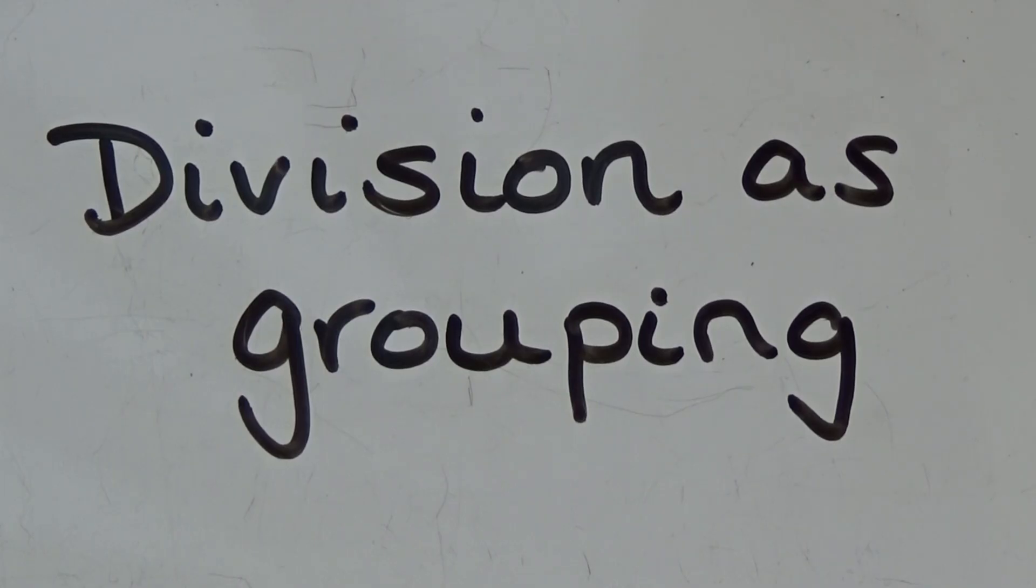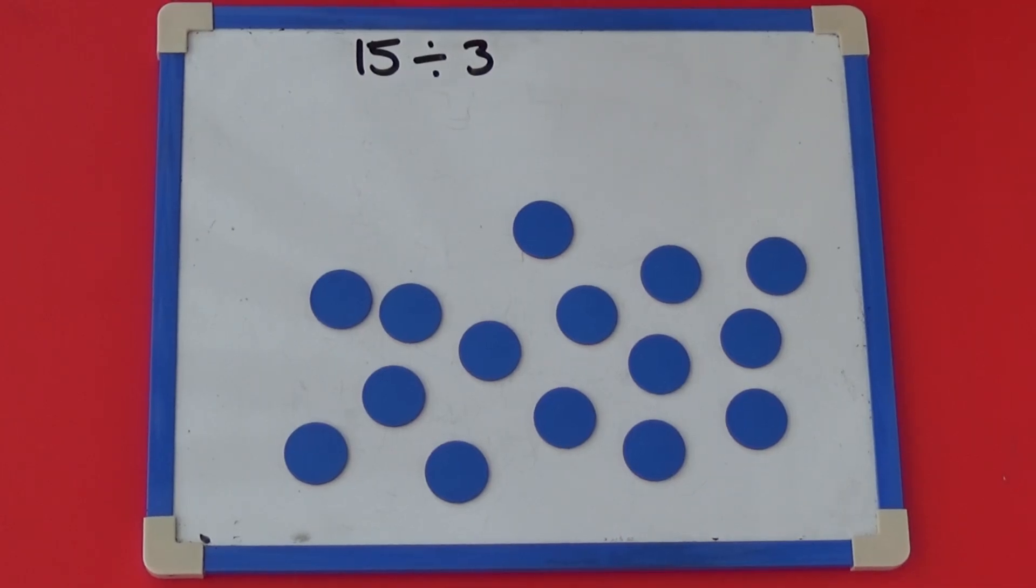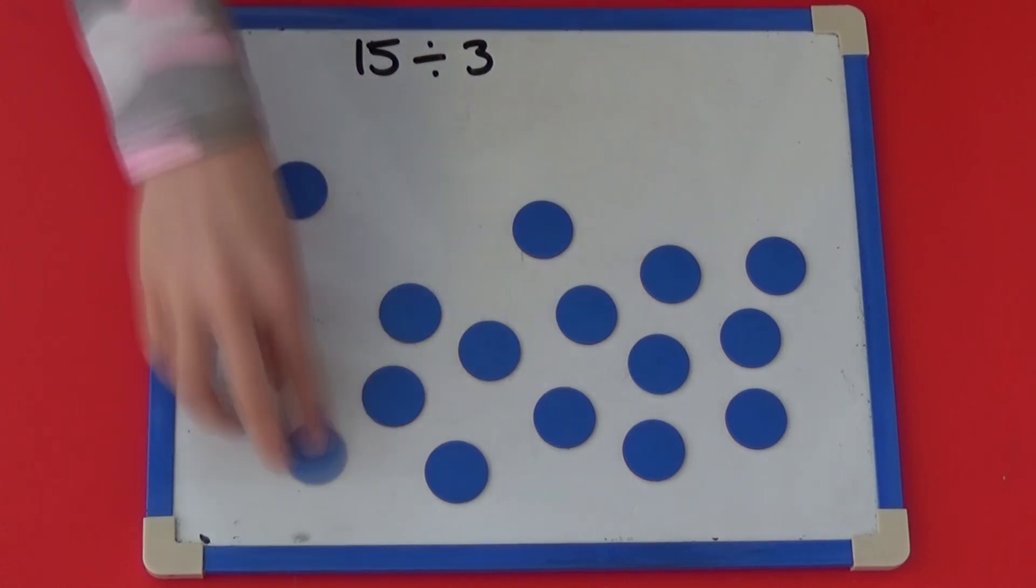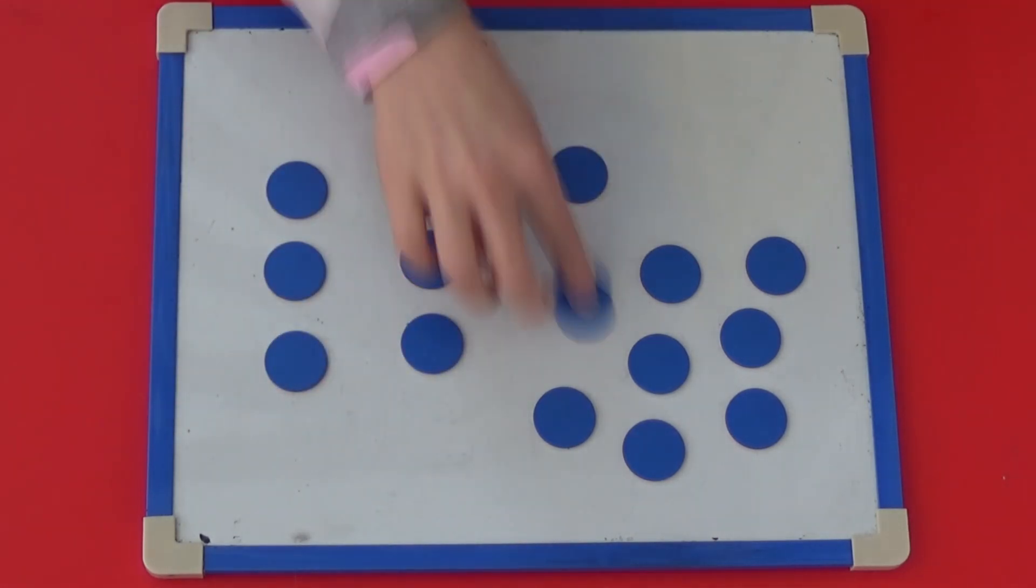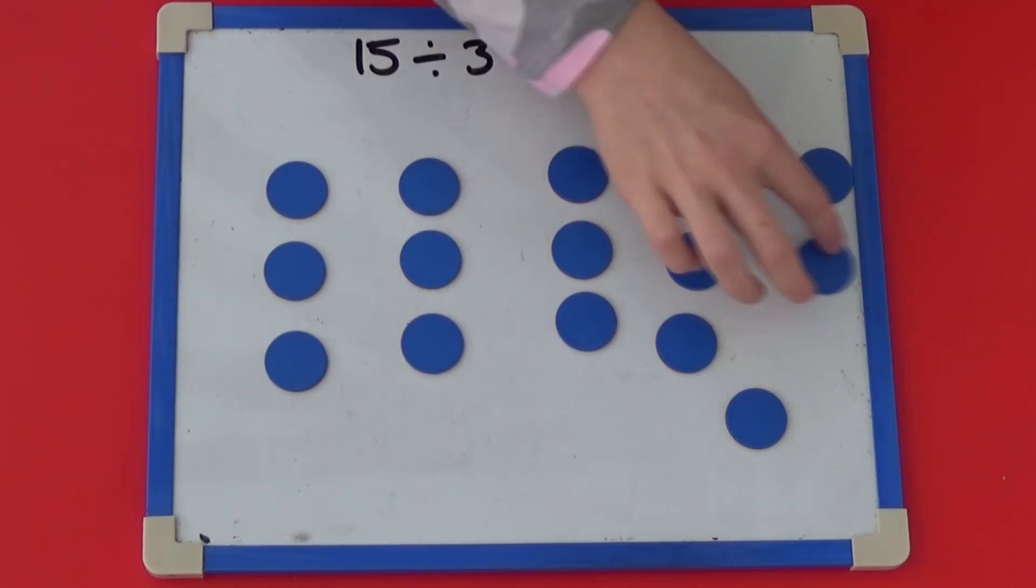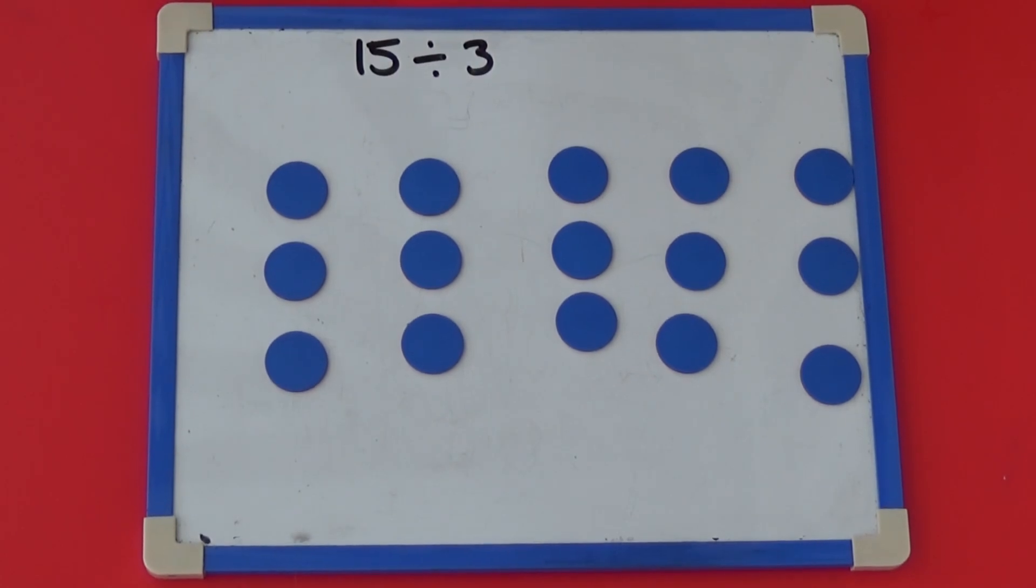This time, we're going to look at the same calculation, but we're going to look at division as grouping. We have our 15 counters again, but this time, instead of sharing between three people, we are going to divide our 15 counters into groups of three and count how many groups of three we can make. So if we divide 15 counters into groups of three, we can make five groups of three altogether.